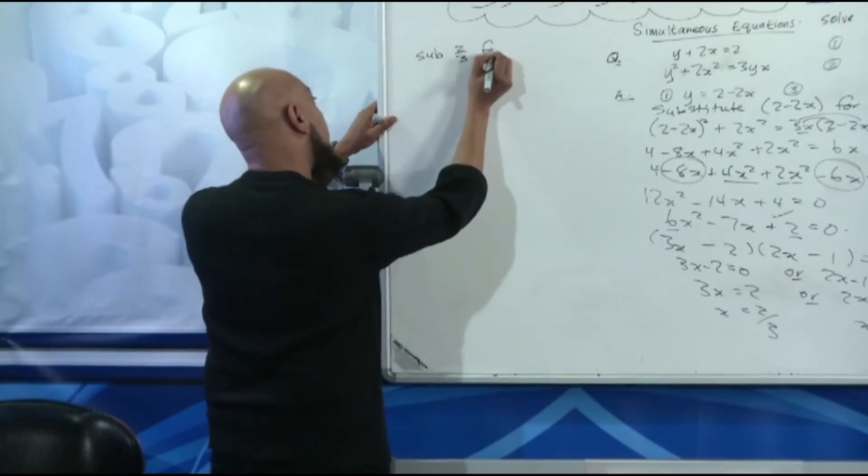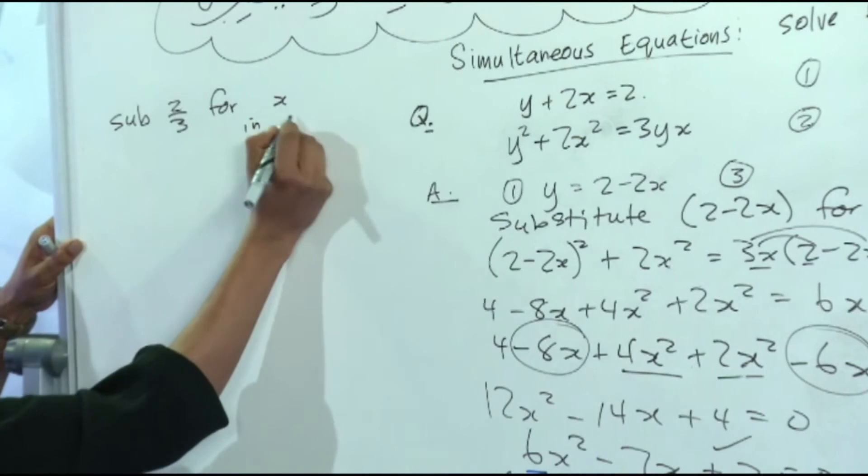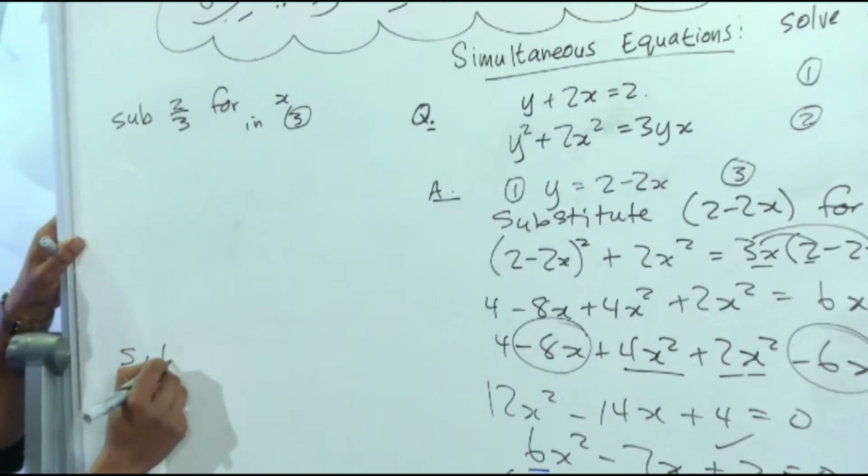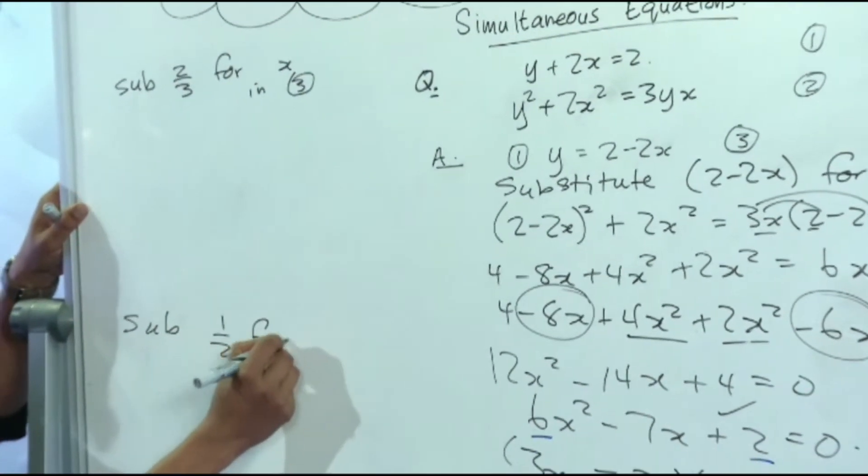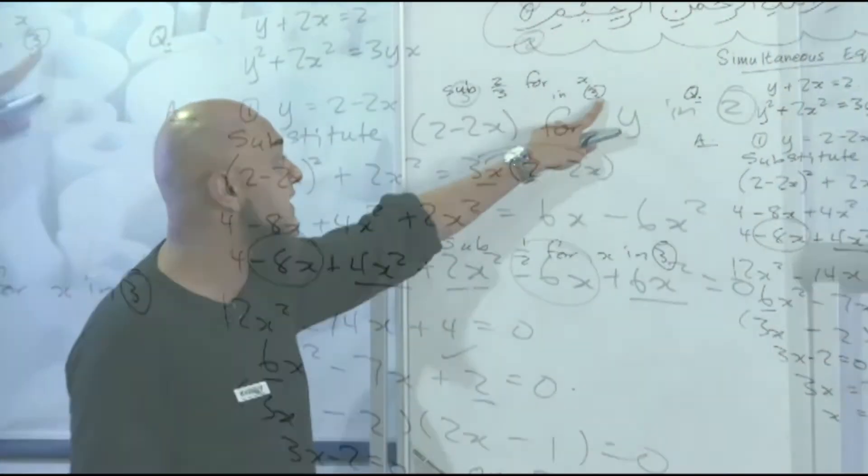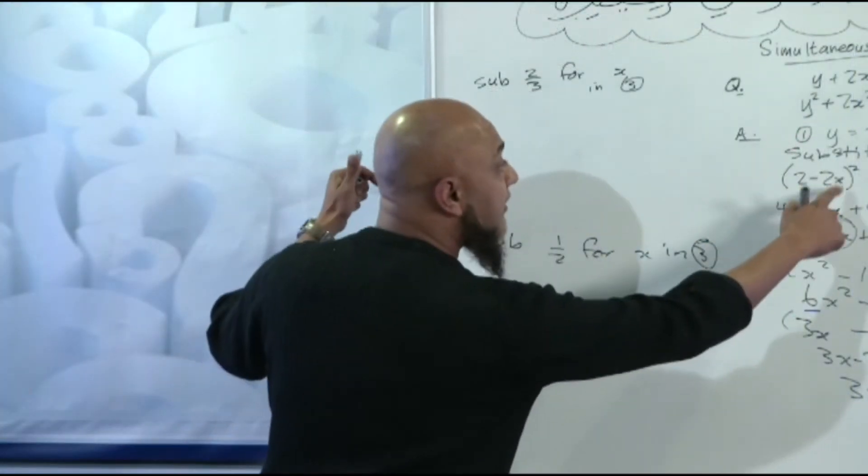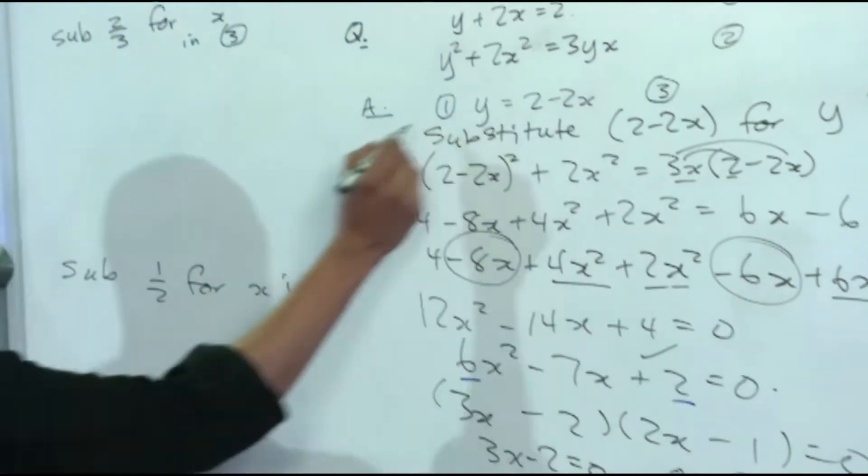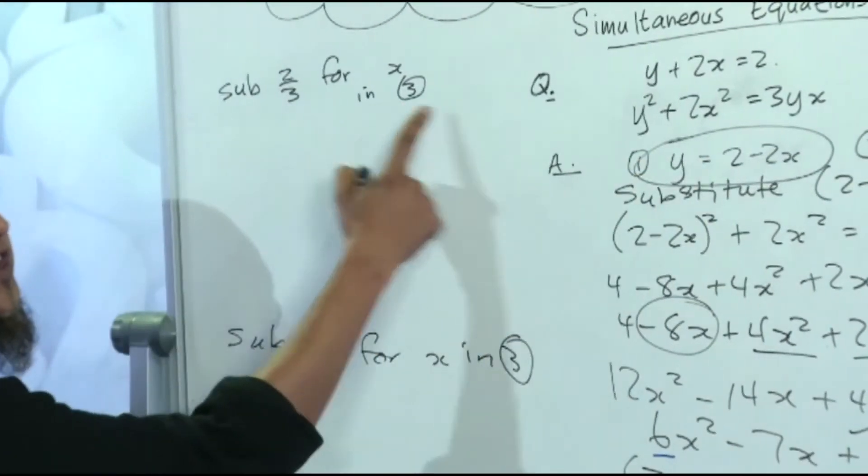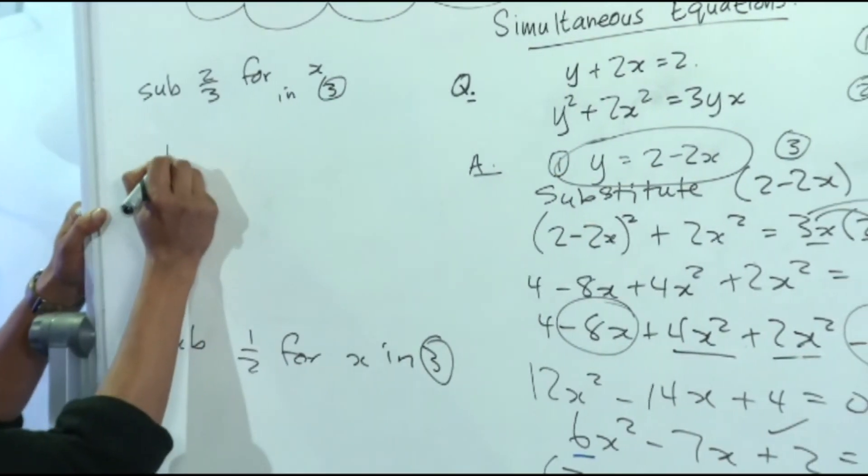Let's go on the side and we're now going to say substitute 2 over 3 for x in equation number 3. So we're substituting 2 over 3 for x in equation number 3 in order to solve for y. Let's see whether your solutions are correct. So what do we have? Equation number 3, what did it look like? Equation number 3 was y is equal to 2 minus 2x.